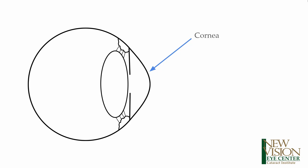If you're considering cataract surgery, the three most important parts of the eye to consider are the cornea — that's the clear covering in the front — the lens, which is the part that actually gets cloudy and is removed during the surgery, and finally the retina, the part of the eye that light is focused onto.